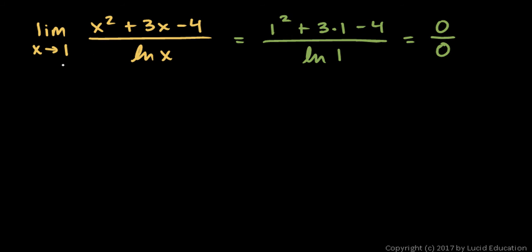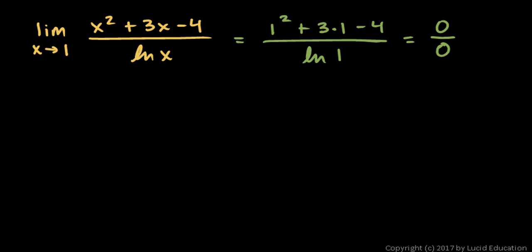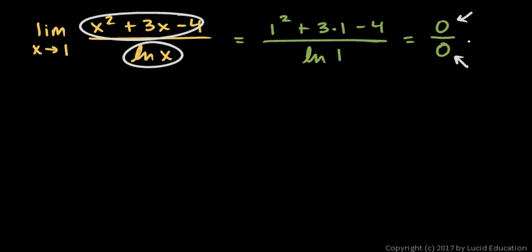What we have here is the limit of a fraction with a numerator and a denominator — one function over another, which is actually important for L'Hôpital's rule. These are two separate functions, and both of these functions cross the axis at x equals 1, because they both have a value of 0 at x equals 1. So this function can't be evaluated at x equals 1, but near x equals 1, as x approaches 1, it might actually have a value, because these two functions might not approach their 0 value at the same rate.